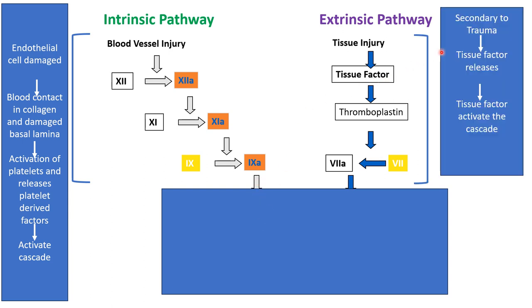The extrinsic pathway is called extrinsic because the injury is from outside of the blood vessel. Secondary to trauma, tissue factor is released into the blood vessel, and this tissue factor activates the extrinsic pathway by acting on factor 7, activating factor 7, which then acts on factor 10.